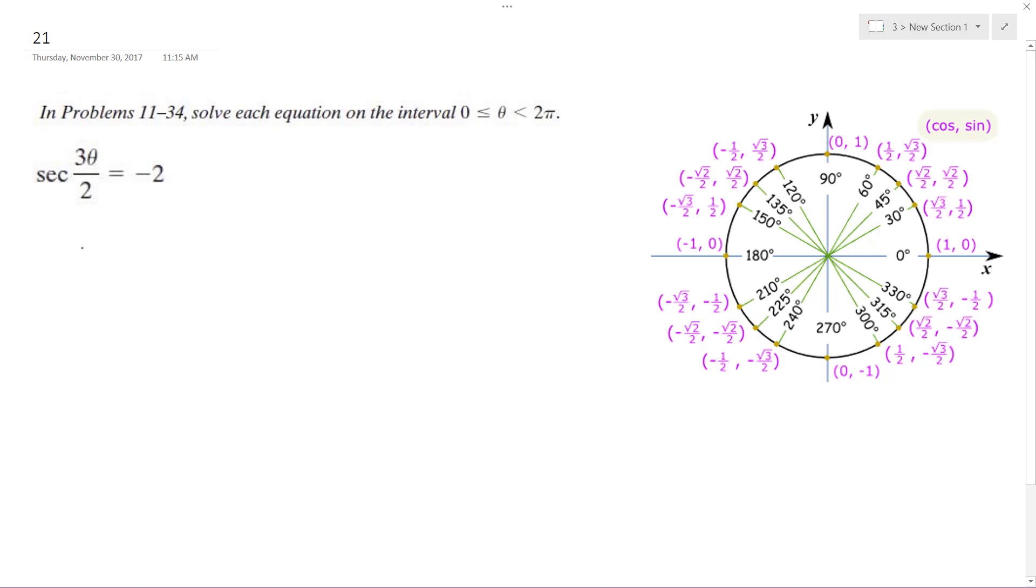I'm going to take the inverse secant of both sides, so 3 theta over 2 equals secant inverse of negative 2.